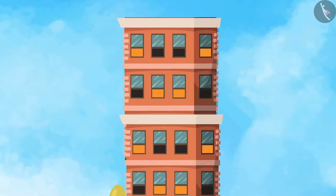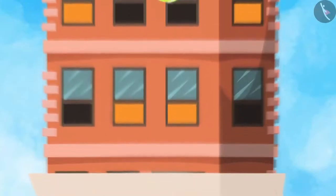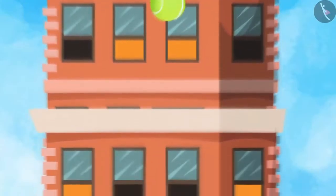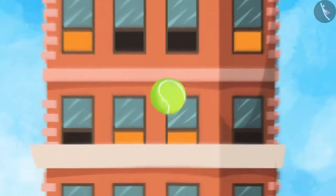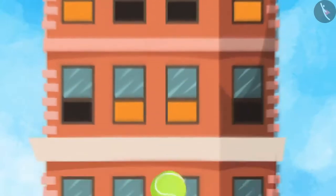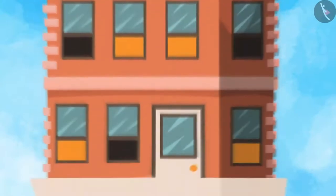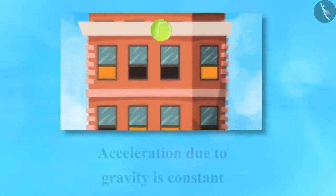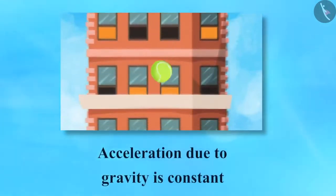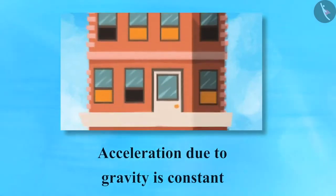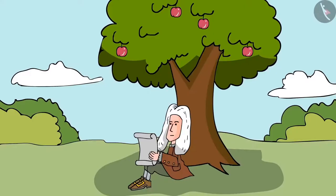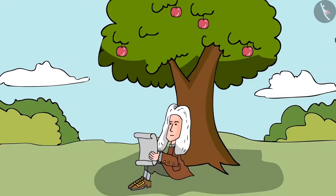Let's take another example. Take a ball to the roof of your house and release it. You will observe that the ball is in uniform accelerated motion. This is because the acceleration due to gravity is constant. You will learn about gravity in chapter 10.